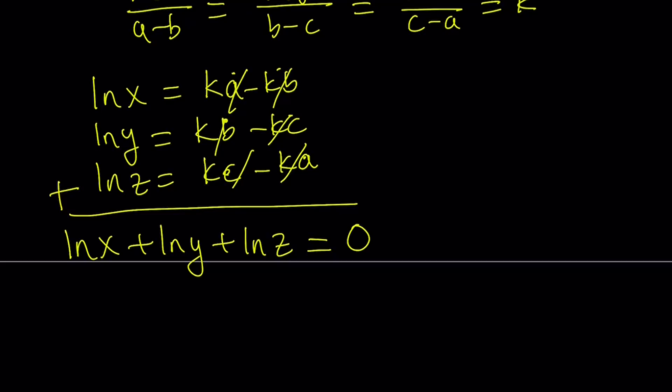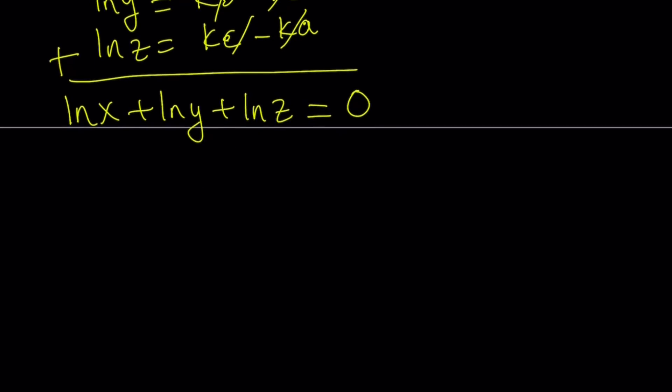But remember, we are trying to find xyz, not this one. But guess what? Using properties of logs, this can be written as the log of a product, because this is the sum of logs. And sum of logs can be written as the log of a product. And by log, I just mean the natural log, because that's our base. ln xyz equals zero. And when you do e to the power of both sides, from here you're going to get xyz equals one. Or you can also think about like log of which number equals zero. And that's one of the properties of rules of logarithms that log one is zero at any base. Okay. So we got xyz equals one from here.